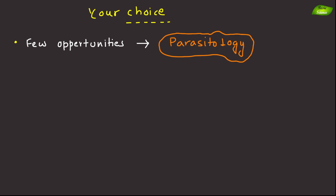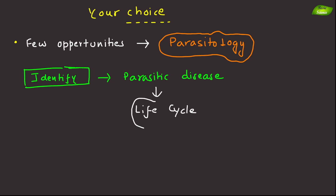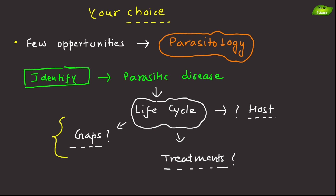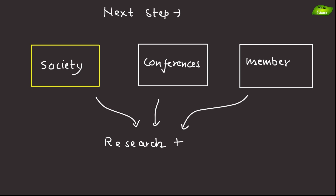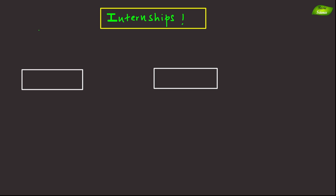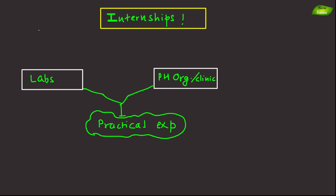If you are interested in parasitology, start by identifying a parasitic disease that interests you. Research its life cycle, how it affects its host, and current methods of treatment and prevention, and consider what gaps exist in existing knowledge. You should also join a parasitology society or attend conferences for access to the latest research and networking opportunities. Look for internships or volunteer opportunities in labs, public health organizations, or veterinary clinics, as practical experience is invaluable.